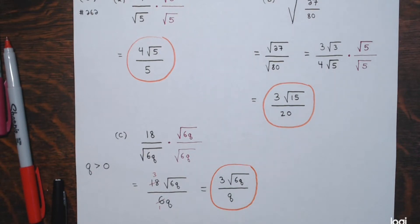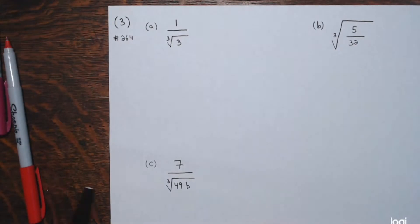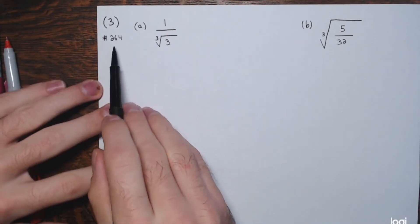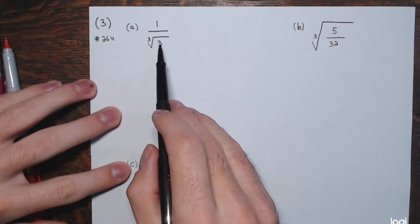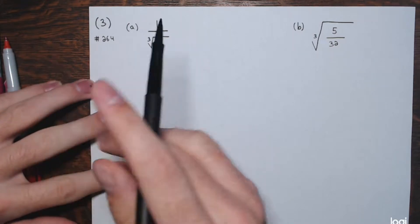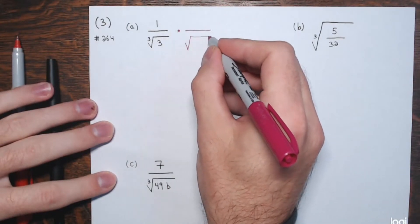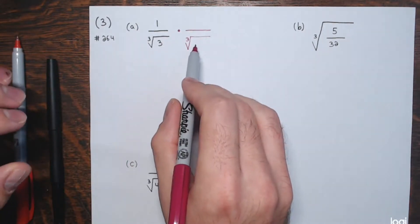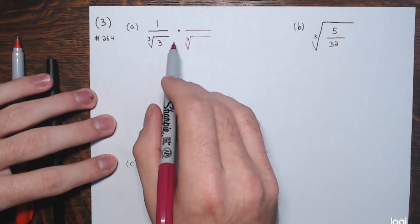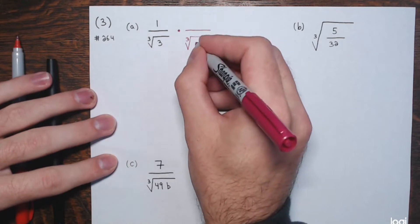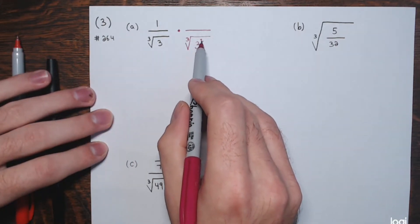The next page has cube roots in the denominator. Example 3 corresponds to number 264 in the text. Part a: we have 1 divided by the cube root of 3. To rationalize, I need to multiply by a cube root in the denominator so that we get a perfect cube as the radicand. This is 3 to the first — I want the power on 3 to be a multiple of 3, so I need to multiply by the cube root of 3 squared, which is the cube root of 9, to get 3 cubed.